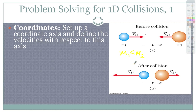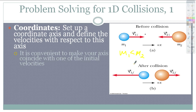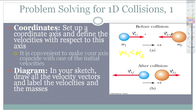When you are setting up problems for these, you want to be wary of your coordinates. One-dimensional collisions are usually going to be all in the x-direction. It's convenient to make your axis coincide with one of the initial velocities — whatever direction your velocity is in, that's the direction we choose for our x-axis. This one will be a positive velocity to start, this one will be a negative velocity. And after the collision, this guy is going to be negative and this guy is going to be positive.